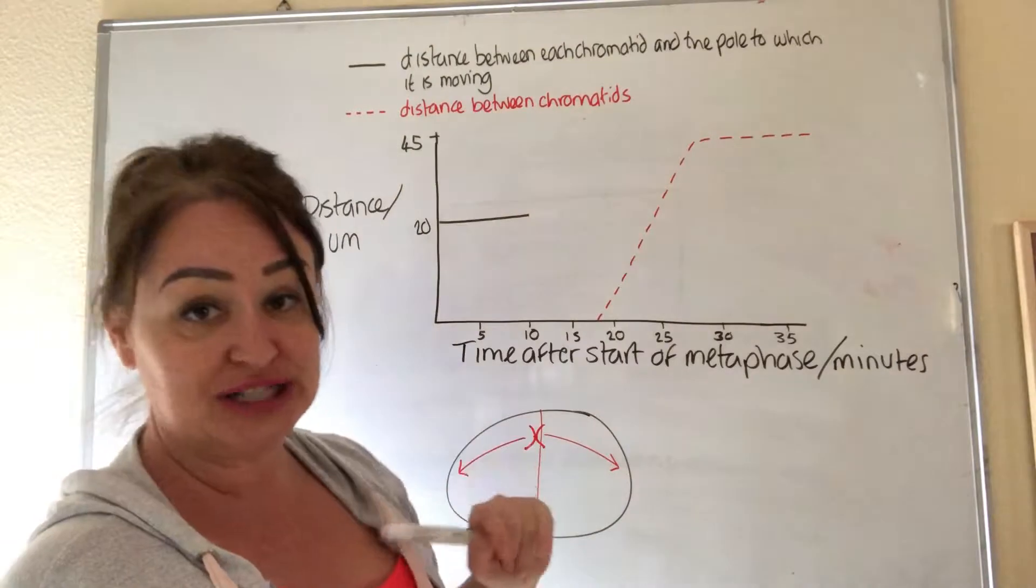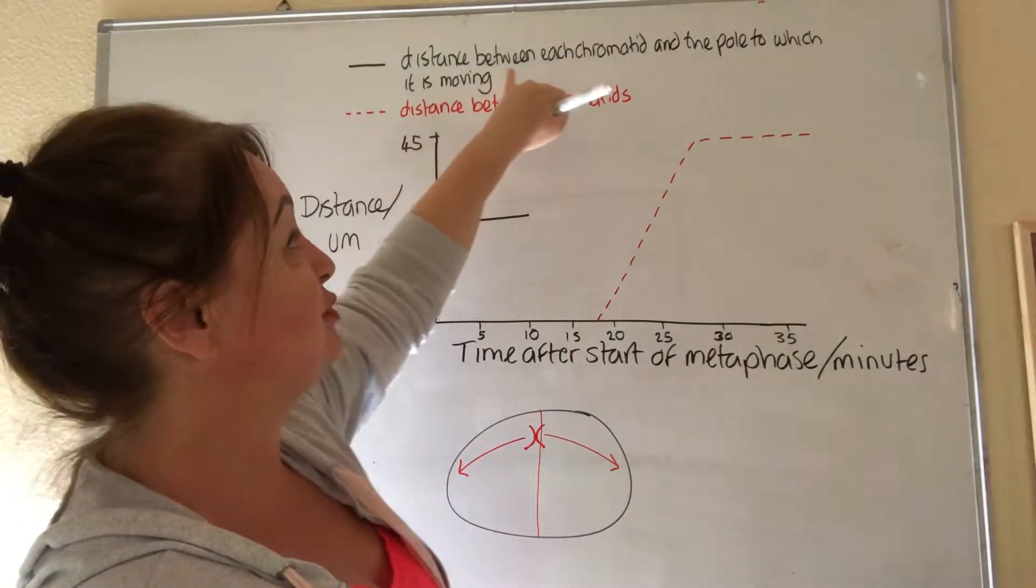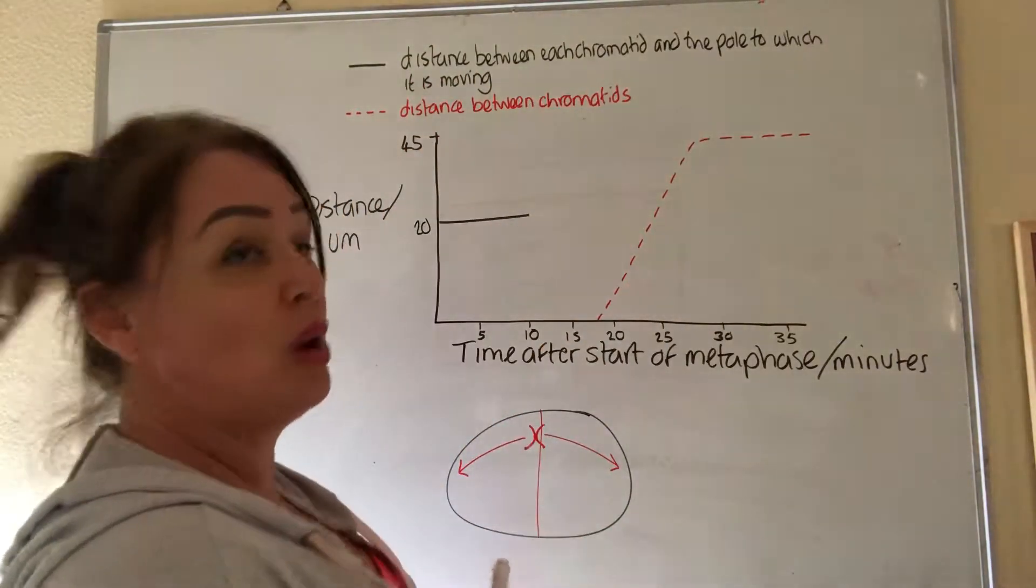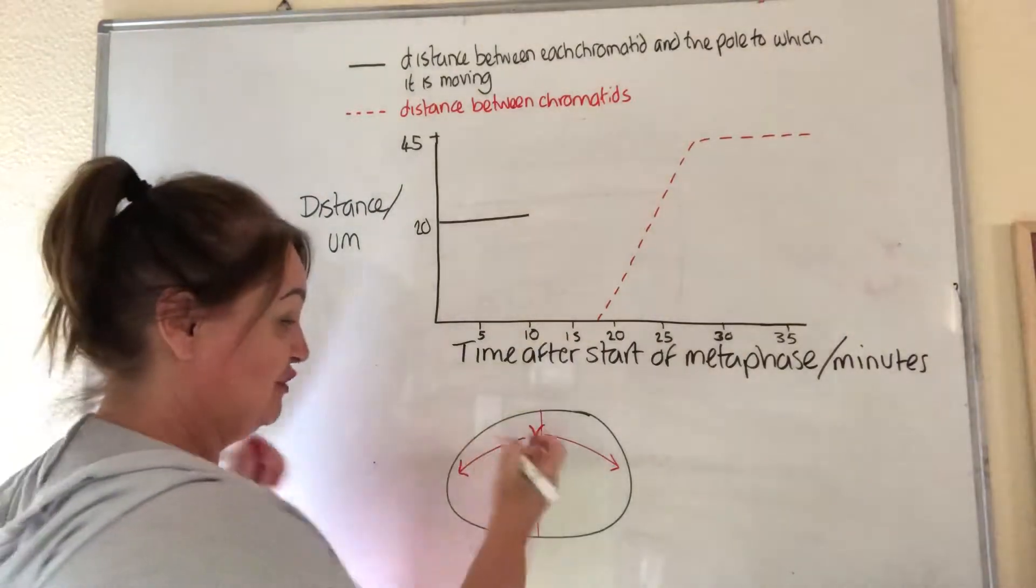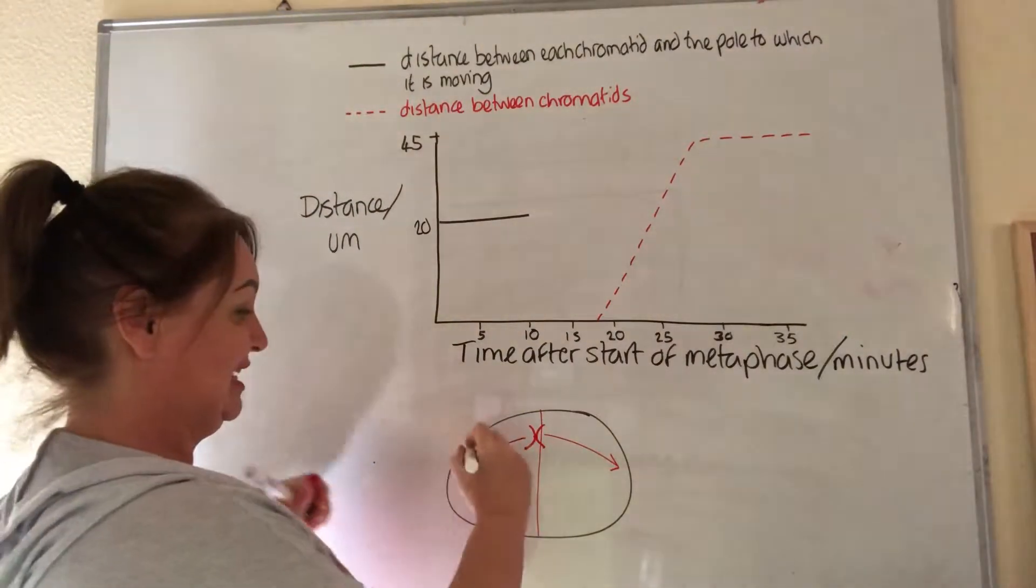And this line here, which is incomplete, is the distance between each chromatid and the pole to which it is moving. So in other words, this distance here.